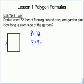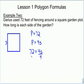P equals 4S. I know what P is — P is 72. So I exchange the P and put a 72 in its place, giving me 72 equals 4S. I solve for S by dividing both sides by 4. 72 divided by 4 is 18, and 4S divided by 4 is S. So one side of the garden is 18 feet.